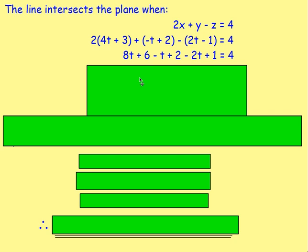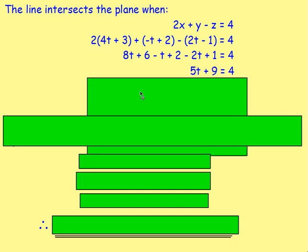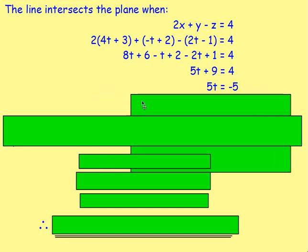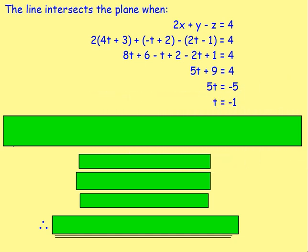Find out t. So if we gather t on the left-hand side: 5t + 9 = 4. Subtract 9 from both sides: 5t = -5, so t = -1.